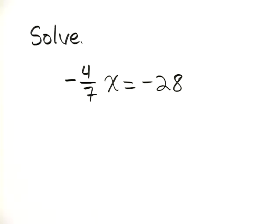Solve. Negative 4 7ths x equals negative 28.